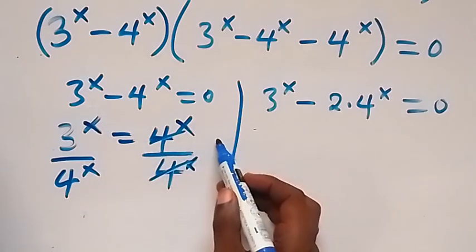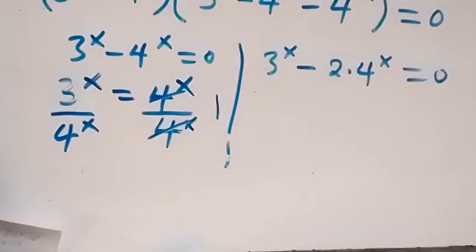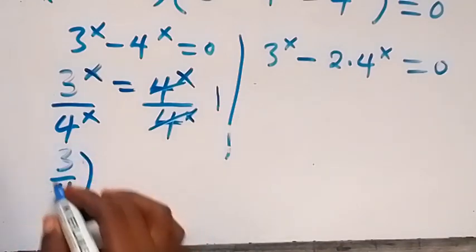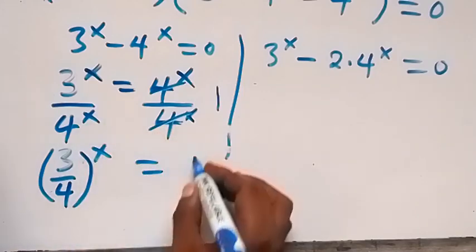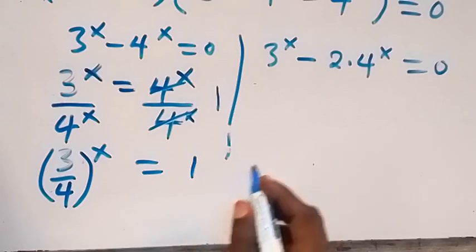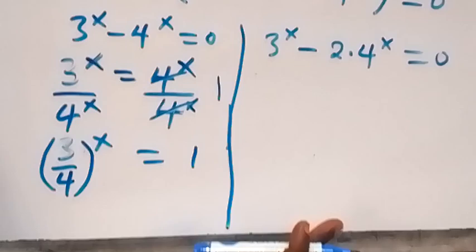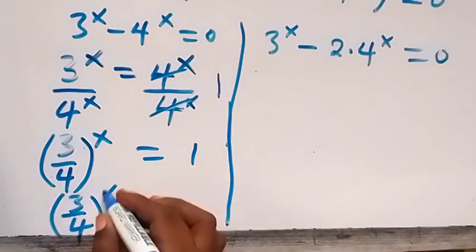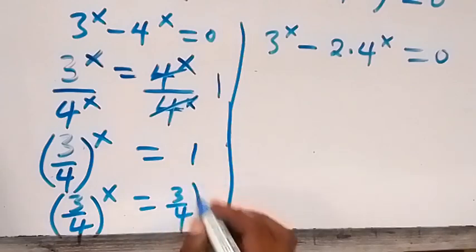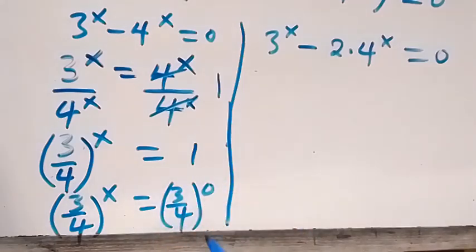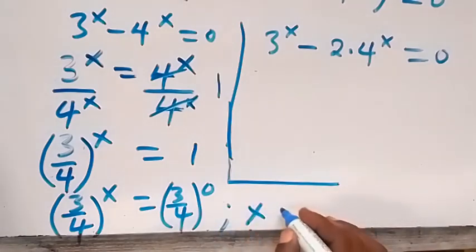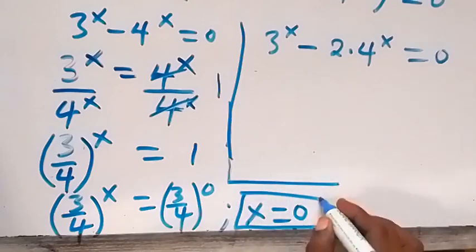Dividing both sides by 4 raised to power x, they cancel each other on the right, leaving 1. On the left we can write this as 3 over 4 raised to power x, which equals to 1. We can also write 1 as 3 over 4 raised to power 0, since any number raised to power 0 gives us 1. The bases are the same, so we conclude that x equals to 0.